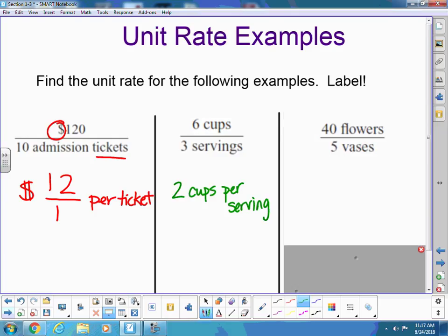Forty flowers for five vases. Eight flowers per vase. Beautiful. Eight flowers. And sometimes we don't even write the word per, we just do this. Per vase. That's my unit rate. That's it. One point three. Done. Any questions?